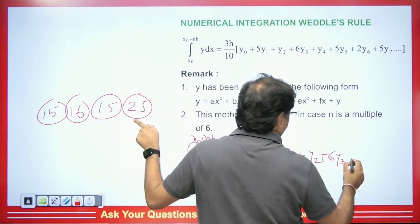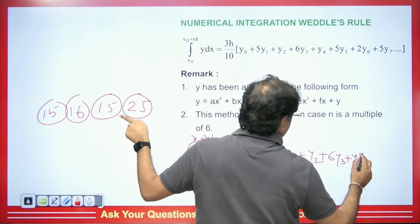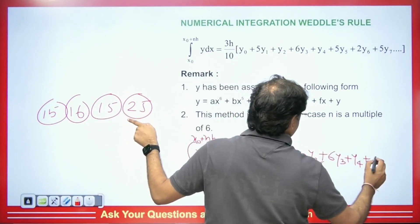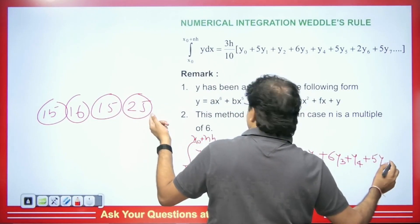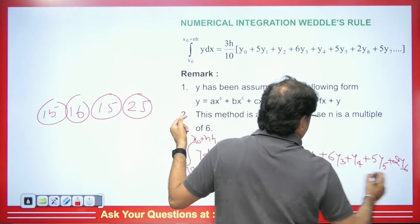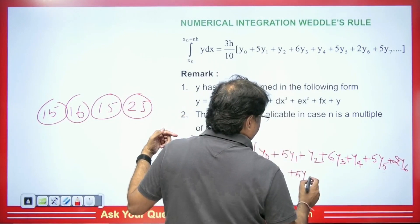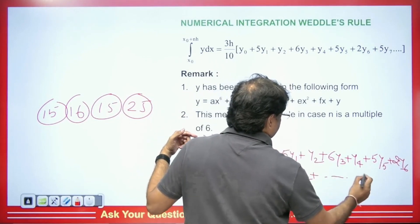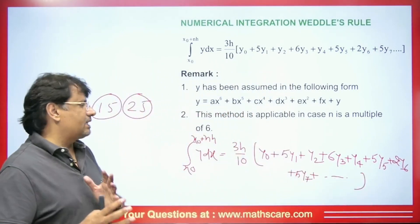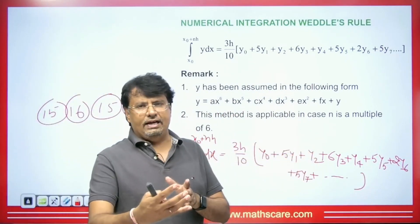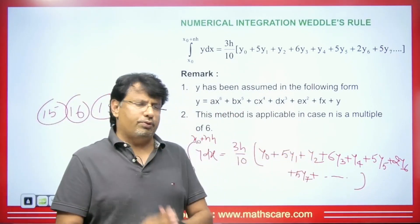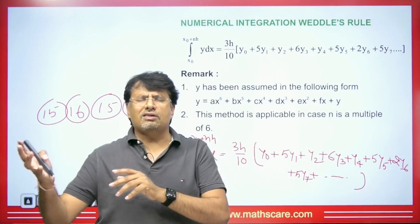Now see this carefully. The coefficient for y₄ here will be 1, and the coefficient of y₅ is also 5, whereas the coefficient of y₆ is 2. In this, the coefficient of y₇ is 5 and so on. But normally we have multiples of 6. Now we have used this formula, so either we can take 6 or 12. Usually the questions in the exam are asked up to 6. It's not usually asked till 12.